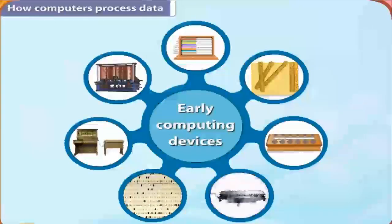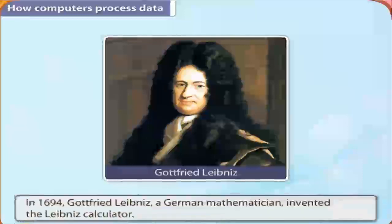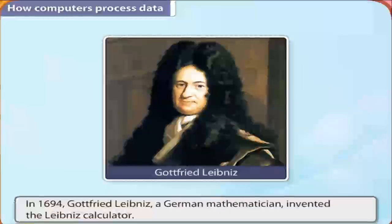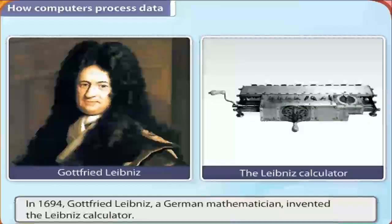In 1694, Gottfried Leibniz, a German mathematician, invented the Leibniz calculator. Unlike the previous machines, the Leibniz calculator could add and subtract numbers as well as multiply and divide using wheels. The Leibniz calculator was considered to be a breakthrough in advanced calculation.